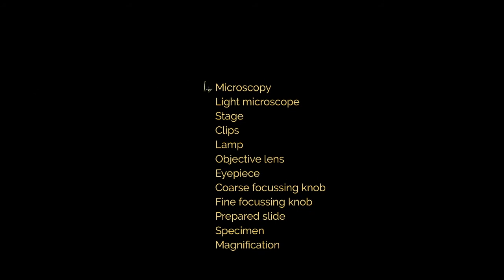Microscopy is the process of using microscopes. Light microscope, we've had a look at it in detail. The stage is almost like the platform that the specimen sits on. The clips hold it in position. The lamp illuminates from below. The objective lens, typically we've said there's three of them, four times, 10 times, 40 times in most cases. The eyepiece contains the eyepiece lens, and it's how we view our specimens through the microscope.